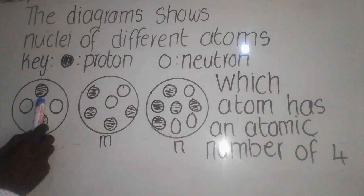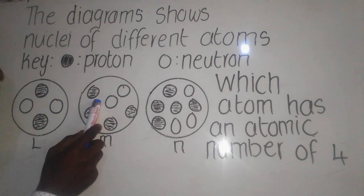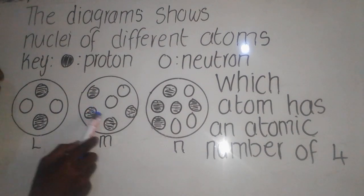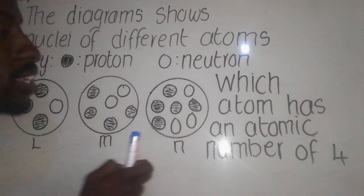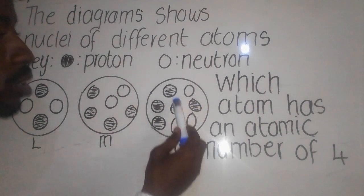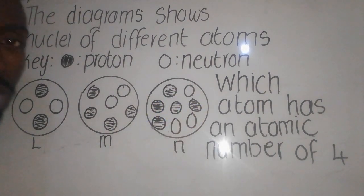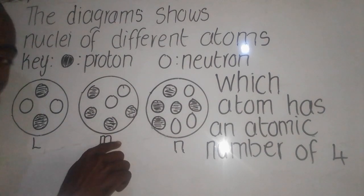As you can see, we have one, two, so this one here, no. For this one we have one, two, three, four, so this is a possible answer. Here we have one, two, three, four, five. So the answer here would be M.